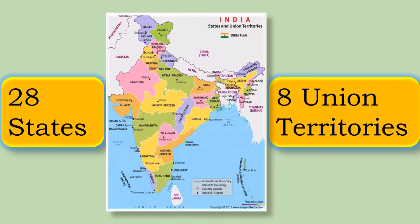Now why is India divided into states and Union territories? Let us understand this. India is a big country, and in order to maintain effective administration it has been divided into states. Administration means maintaining law and order in the state, taking care of overall people development, taking care of the education system, and handling big projects like road development.